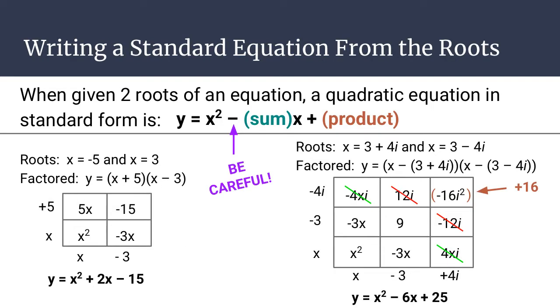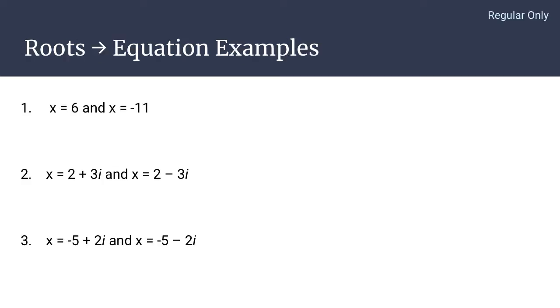To review, when you are given two roots, the equation is pretty fast if you can find the sum and the product. When you write the equation, it's y equals x squared and the opposite of the sum times x plus the product. That means for each of these examples, we will need to find both the sum and the product in order to write the quadratic equation.